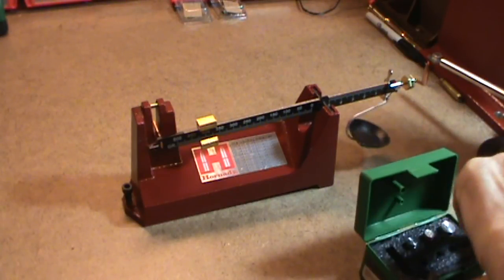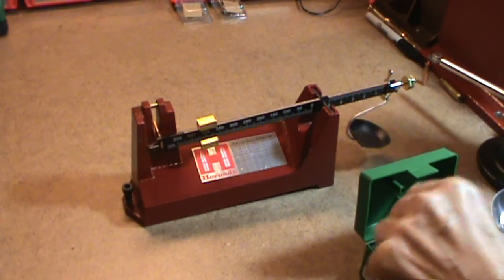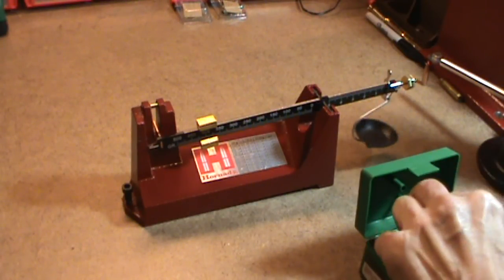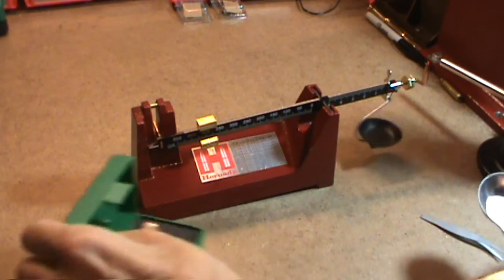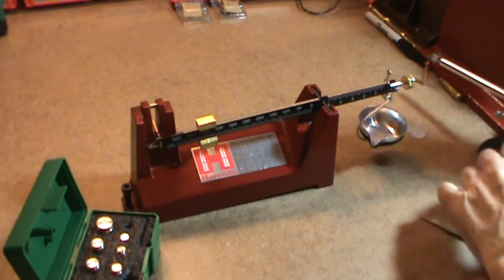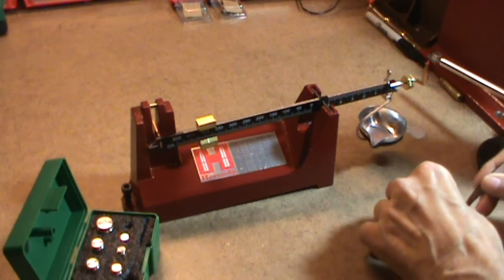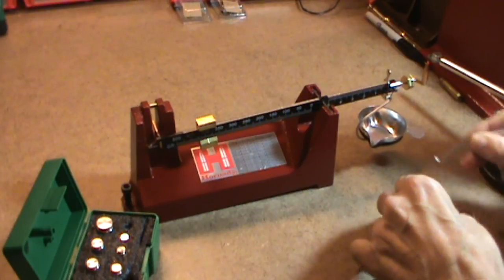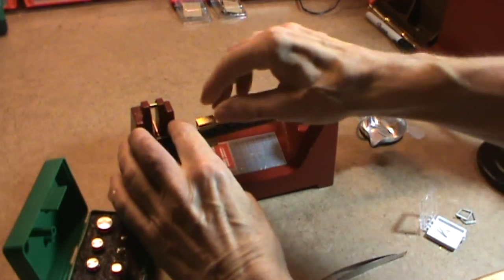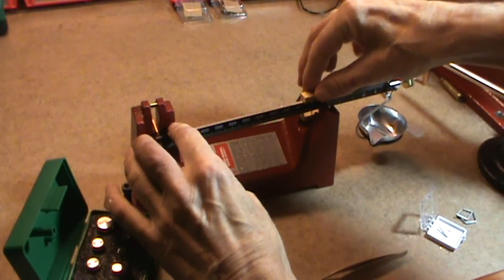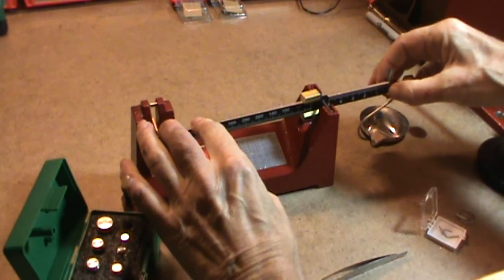Now, let me put my check weights away here. And we'll try some of the lower weights down in the one or two grain area. Let me put my one grain weight on there.